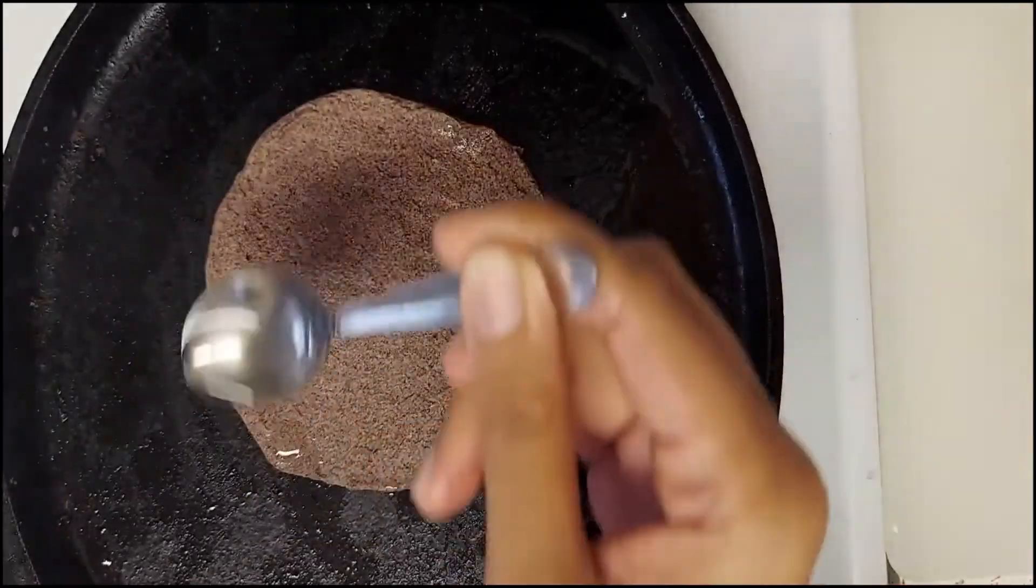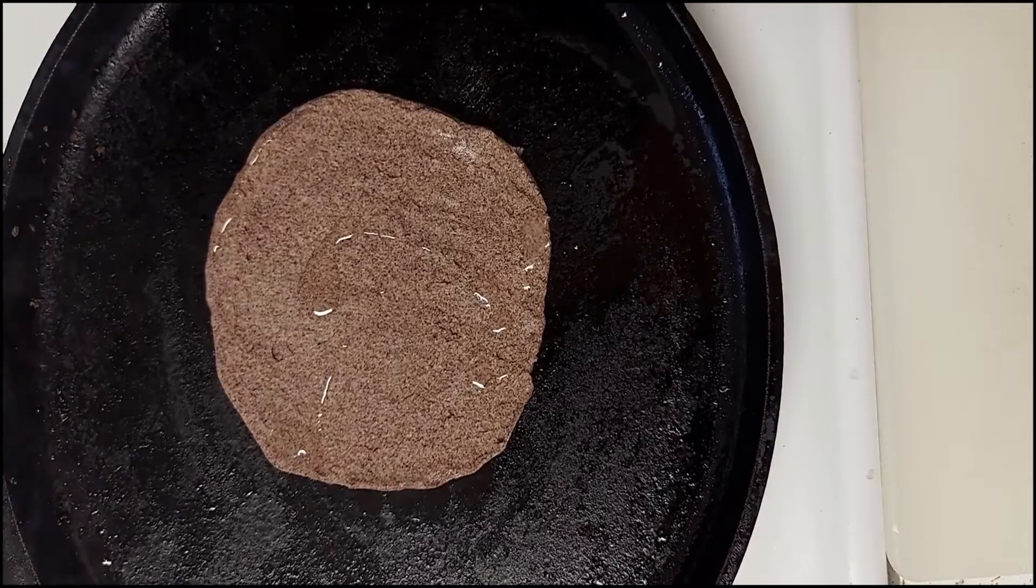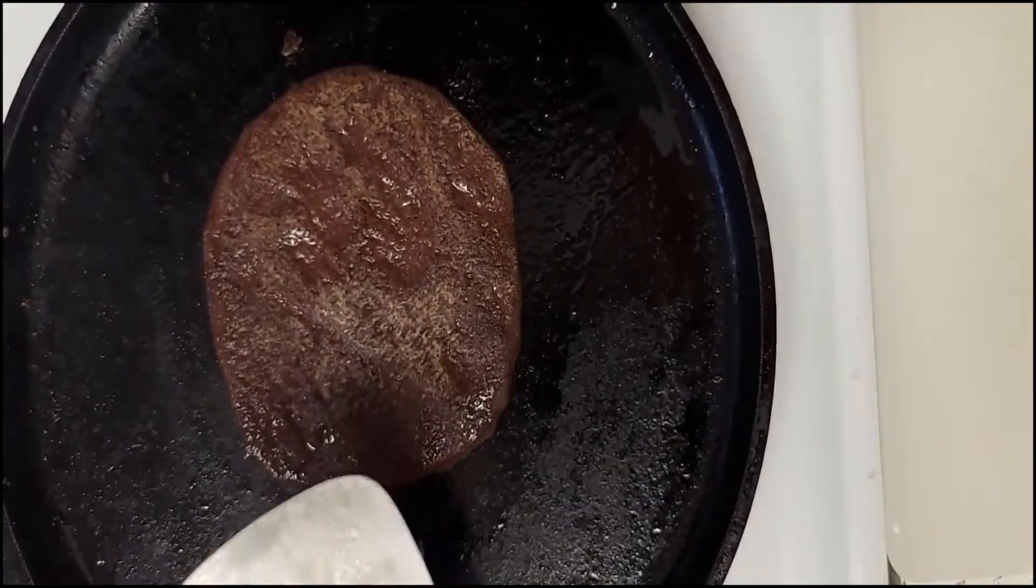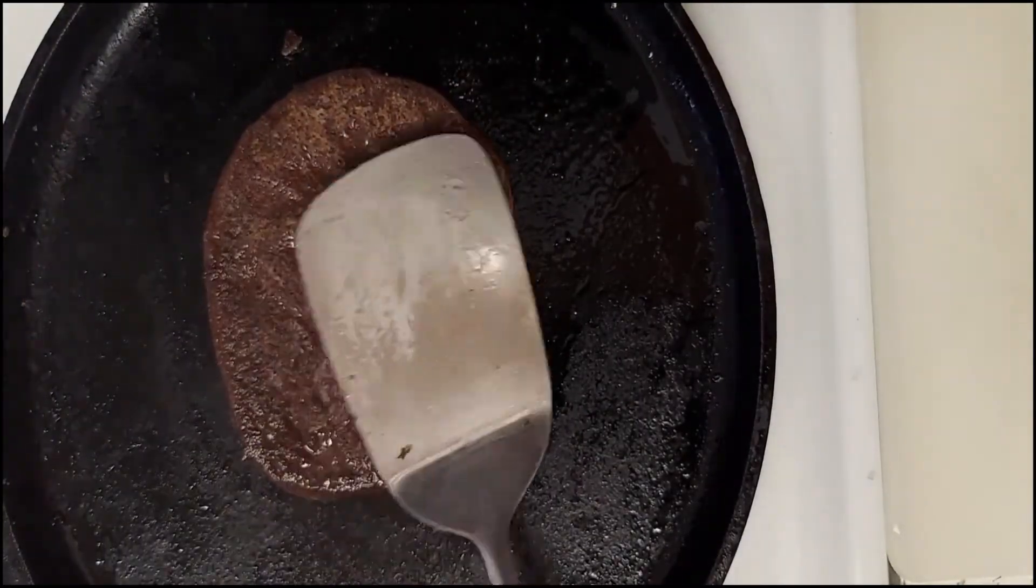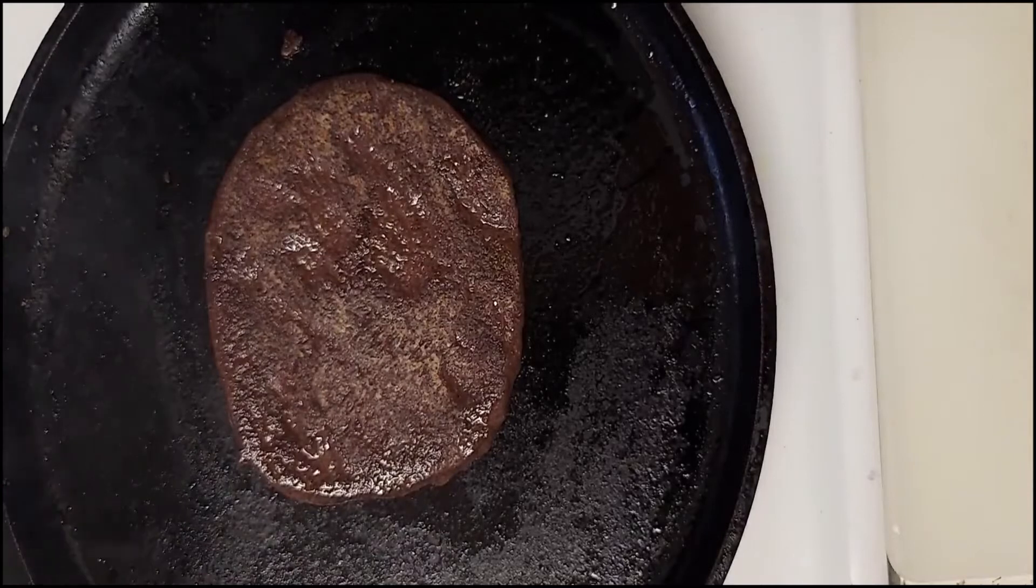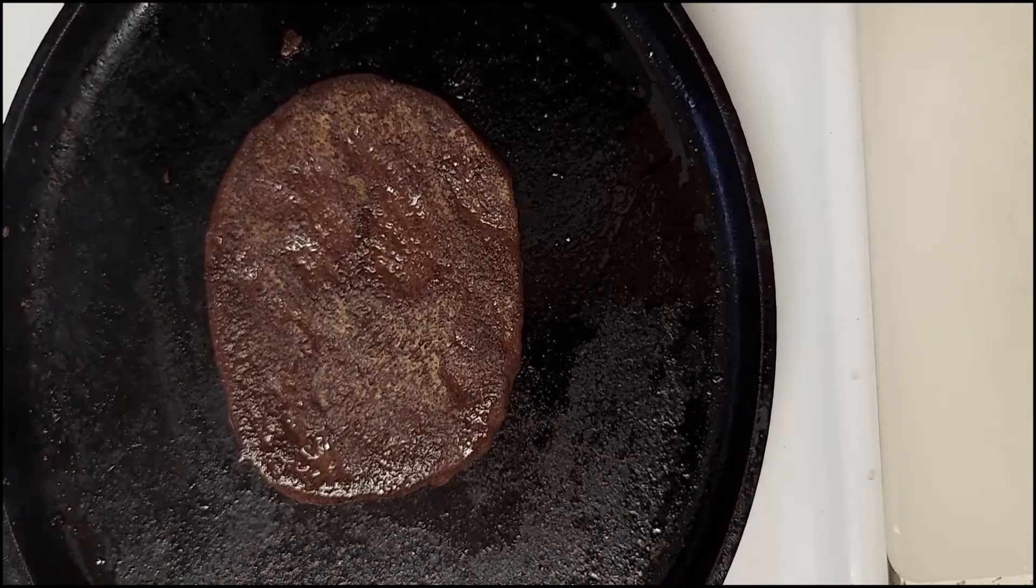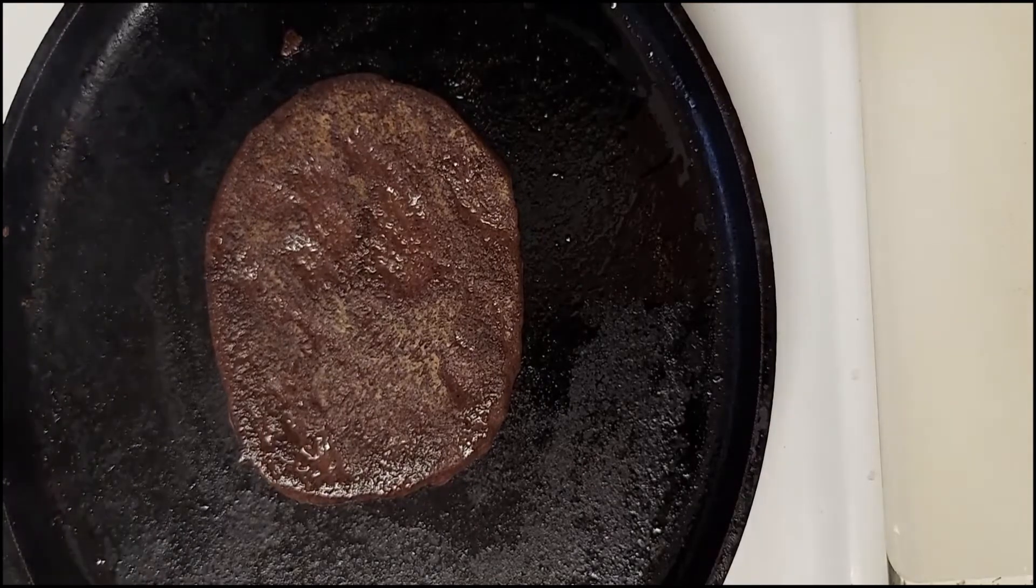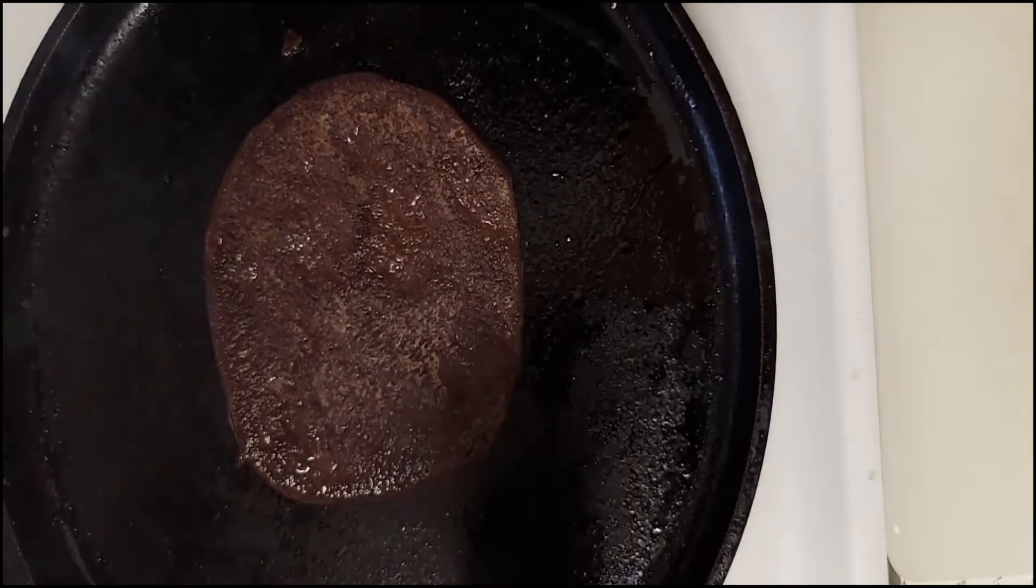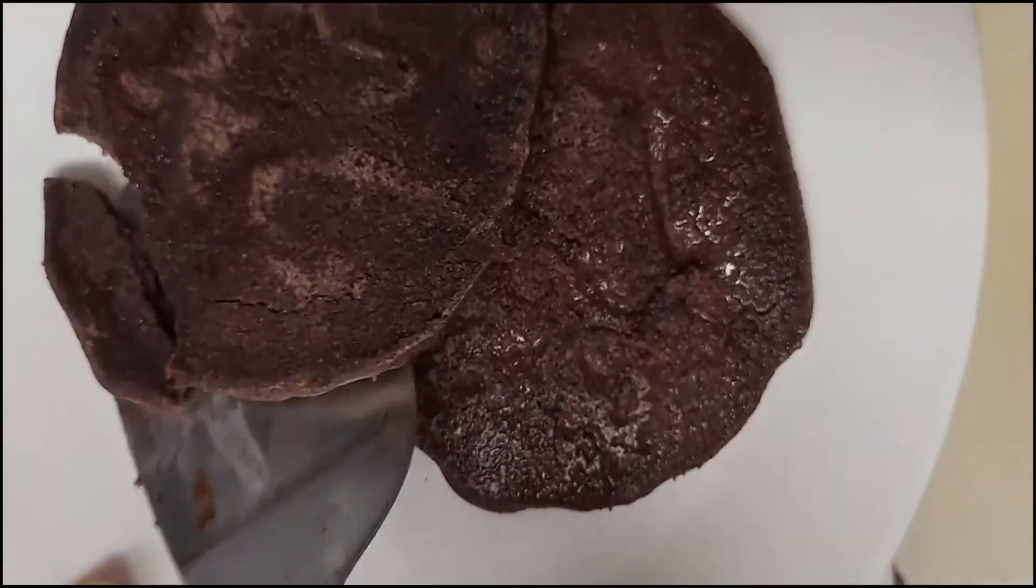This might take around one to two minutes. Once the bottom side turns brown, flip it and wait for the other side to turn brown. Once it is cooked completely, remove it from the pan.